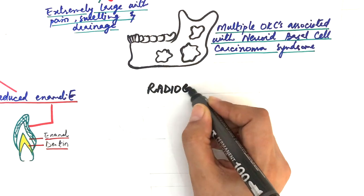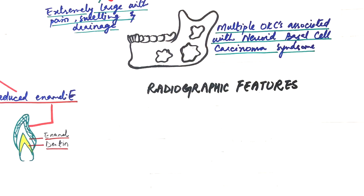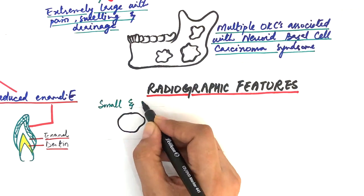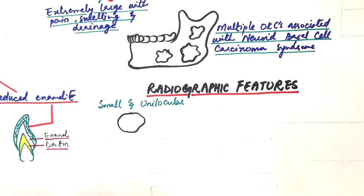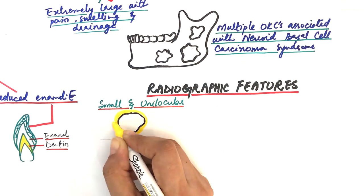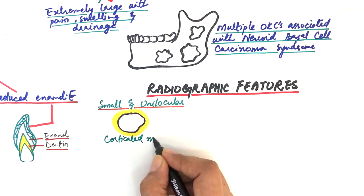The radiographic presentation of the cysts are just like other odontogenic cysts and tumors. Smaller OKCs appear to be a well-defined unilocular radiolucency, and since the smaller lesions are slow growing, they have a well-corticated margin around their radiolucent zone.